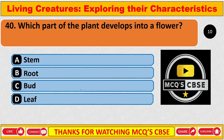Which part of the plant develops into a flower? The correct answer is C: Bud.